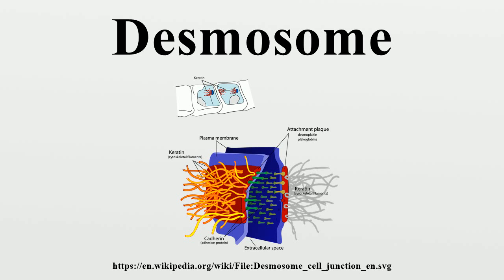Desmosomes are molecular complexes of cell adhesion proteins and linker proteins that attach the cell surface adhesion proteins to intracellular keratin cytoskeletal filaments. The cell adhesion proteins of the desmosome, desmoglein and desmocollin, are members of the cadherin family of cell adhesion molecules. They are transmembrane proteins that bridge the space between adjacent epithelial cells by way of homophilic binding of their extracellular domains.